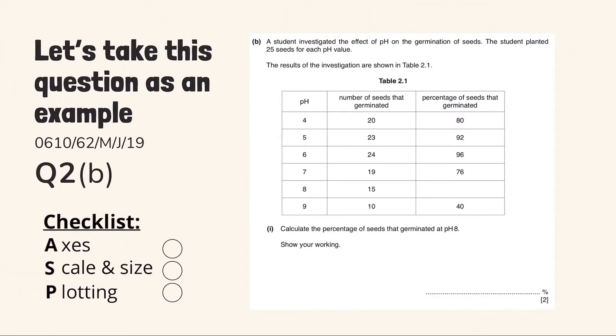Let's take this question as an example. It comes from Paper 6, 2019, May-June Variant 2. The question says that the students investigated the effect of pH on the germination of seeds. The students planted 25 seeds for each pH value. The results of the investigation are shown in Table 2.1.